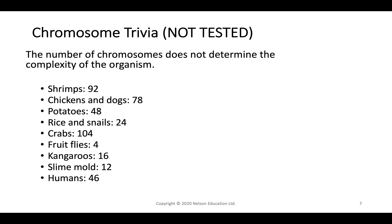The number of chromosomes an organism has is not necessarily directly related to its complexity. For example, shrimp have double the chromosomes we do. Humans have 46, kangaroos have 16, and crabs have even more. Fruit flies and slime mold have fewer. So chromosome count doesn't always correlate with organismal complexity.